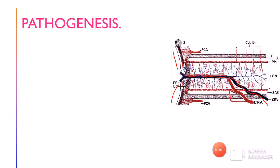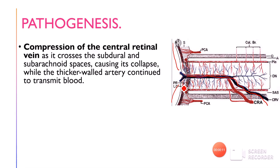There are several theories as to what causes papilledema, but two are basic. The first is compression of the central retinal vein. The central retinal vein carries blood from the retina, enters the substance of the optic nerve, and exits through it, passing through the subarachnoid space. In papilledema, there is swelling and increased pressure in the subarachnoid space, which compresses the central retinal vein due to its thinner walls, leading to edematous changes in the disc.